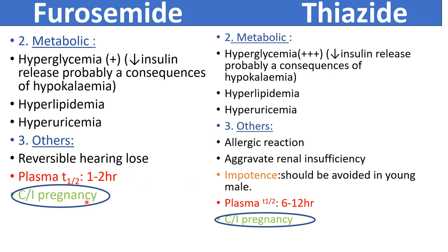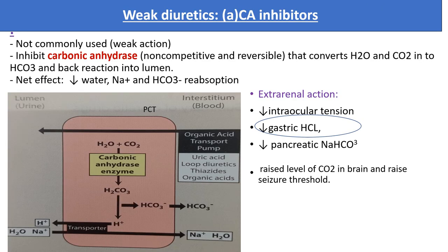Plasma half-life of furosemide is 1 to 2 hours, while thiazide half-life is 6 to 12 hours. Both drugs are contraindicated during pregnancy.